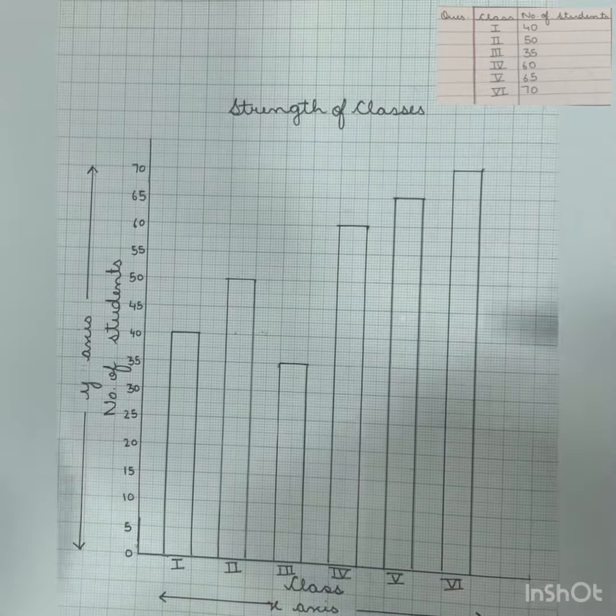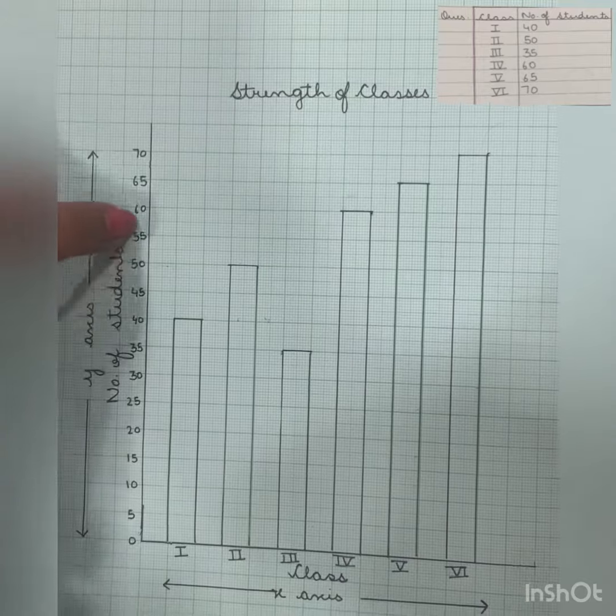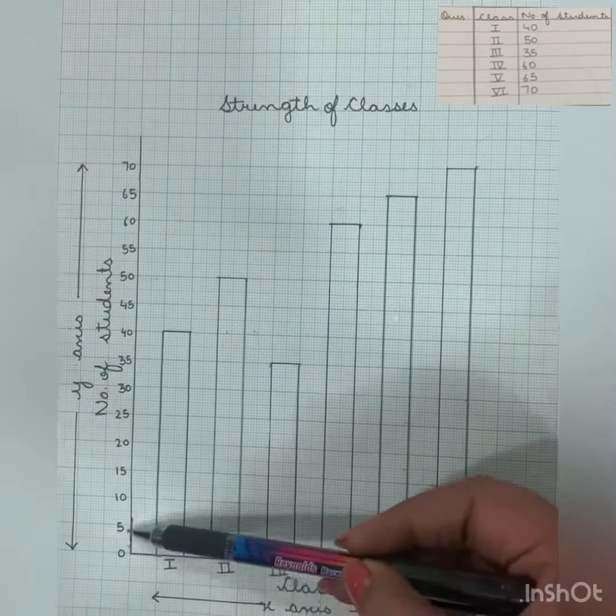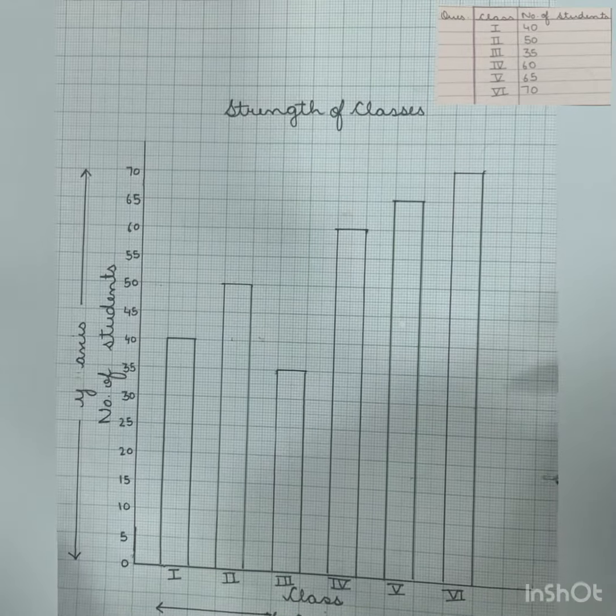Now this is your scale. These numbers where we have represented, this is our scale. So our scale may vary according to our data. As we can see in the example, we have the numbers that are easily divisible and multiples of 5.